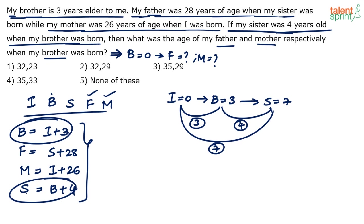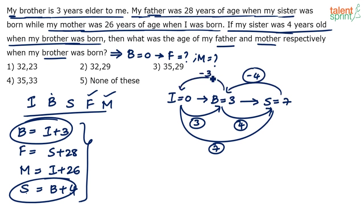When sister was born, brother's age was minus 4 — from brother to sister is 4, from me to brother is 3. In reverse direction it's minus 4, meaning brother was supposed to come 4 years later, and I was planned 3 years after my brother.